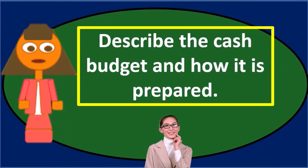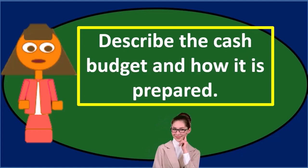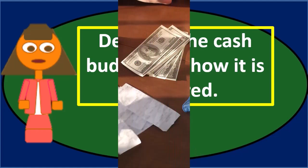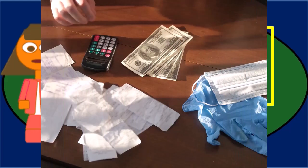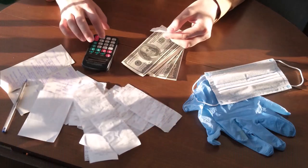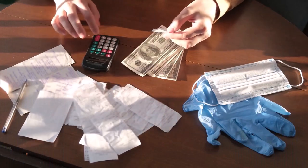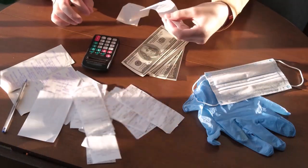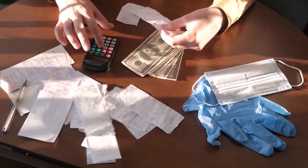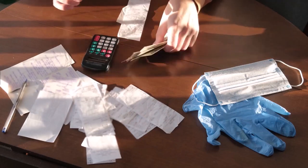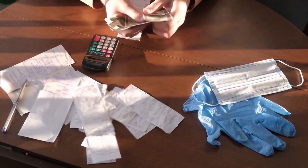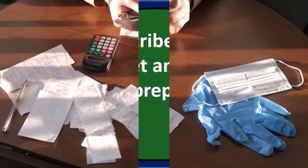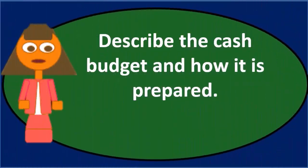The cash budget is going to be part of the total budgeting process. Typically, it's going to be part of the master budgeting process, and we can go through the master budgeting process goals — what are the goals of the master budgeting process?